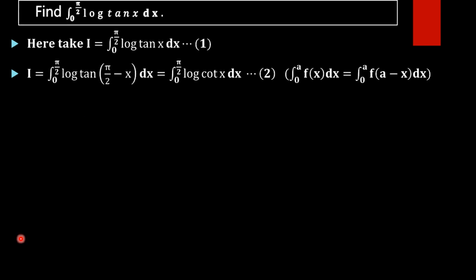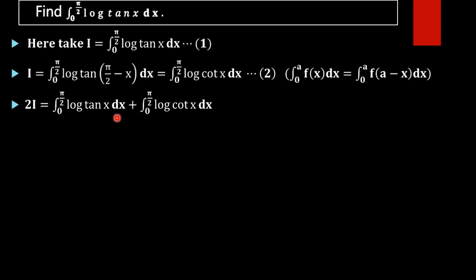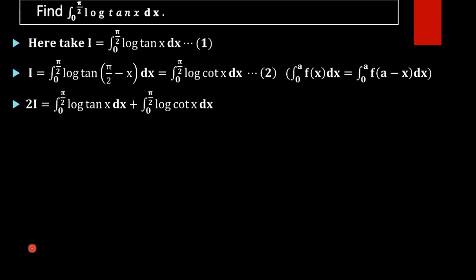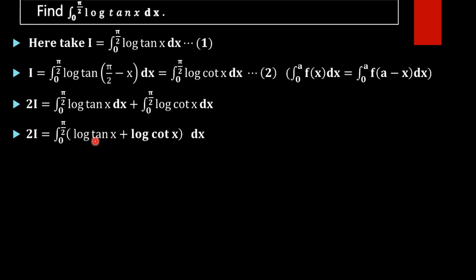Adding the left-hand side and right-hand side of equations 1 and 2, we get 2I equals the integral from 0 to π/2 of log(tan x) dx plus the integral from 0 to π/2 of log(cot x) dx. Taking the integral from 0 to π/2 outside, the integrand becomes log(tan x) plus log(cot x) dx.